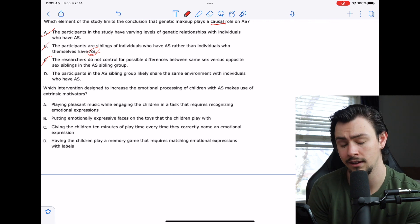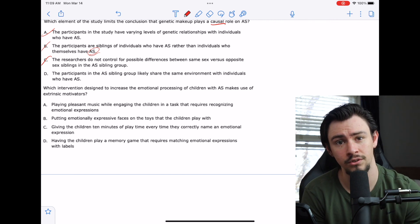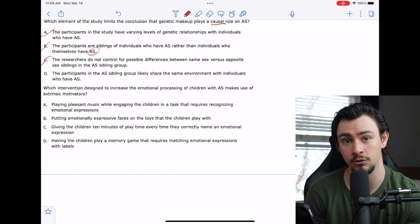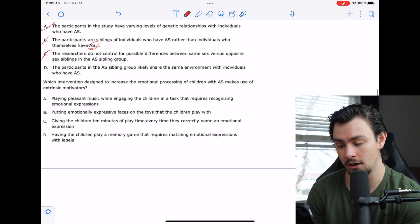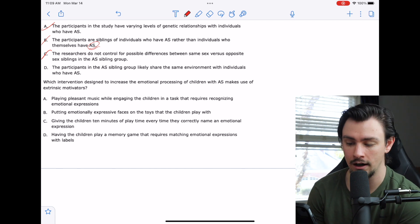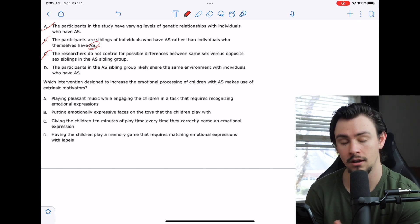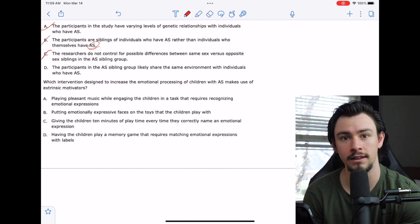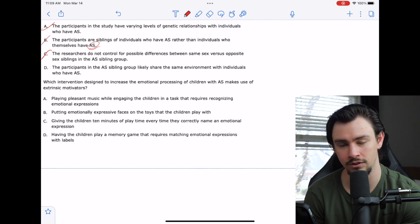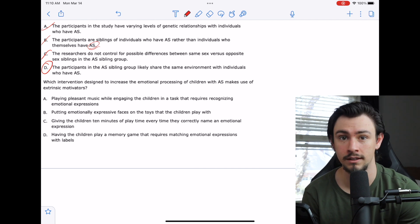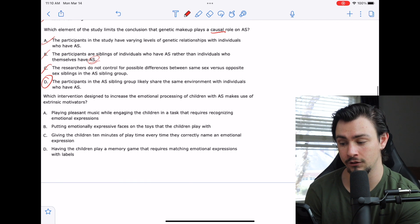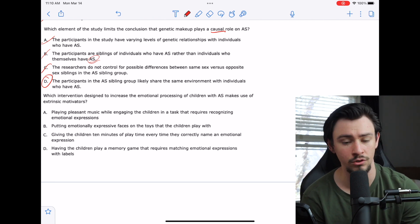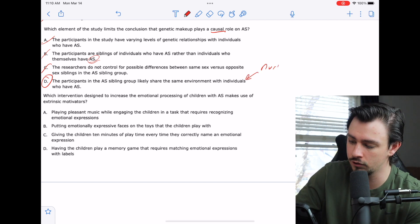That only leaves us with D, but I'm still going to make sure that it's right. Because sometimes you'll get through all four of them, you rule out the first three, and you get to the last one, and that's not right either. D says the participants in the Autism Spectrum sibling group likely share the same environment with individuals who have AS. If they're siblings, then they're probably sharing the same environment. I like answer choice D. That's going to be the best one that is an additional confounding variable because now they're sharing the same environment. So we don't know if it's nature or nurture.